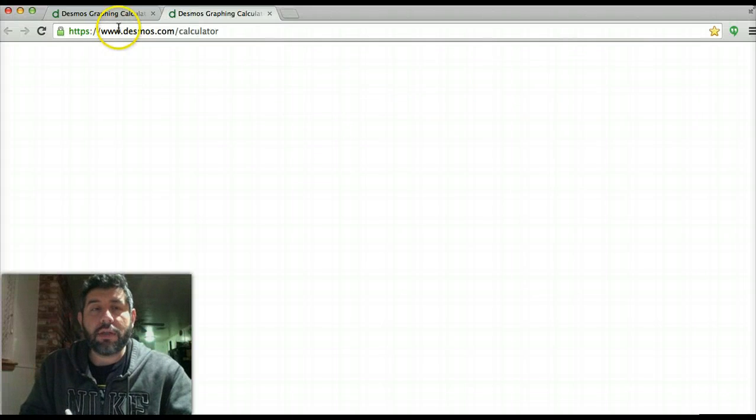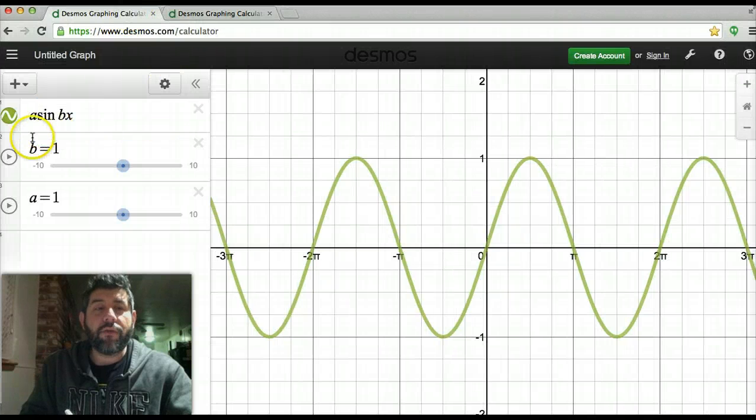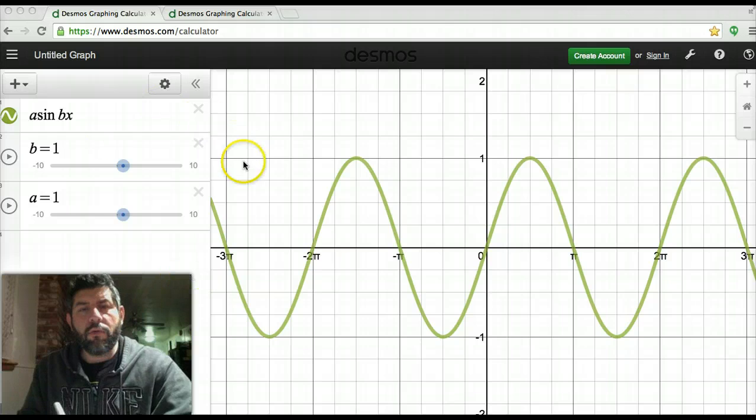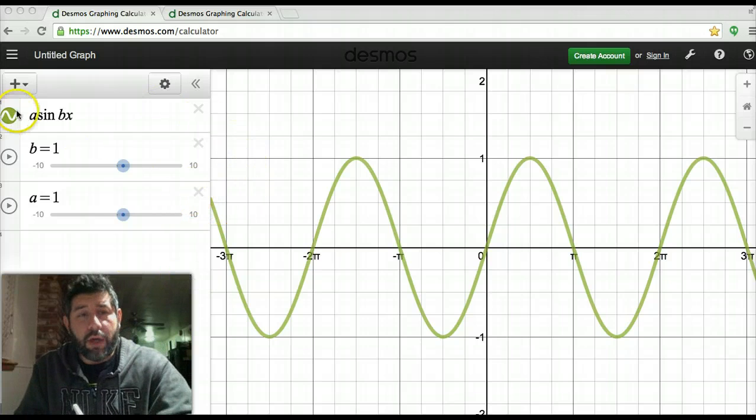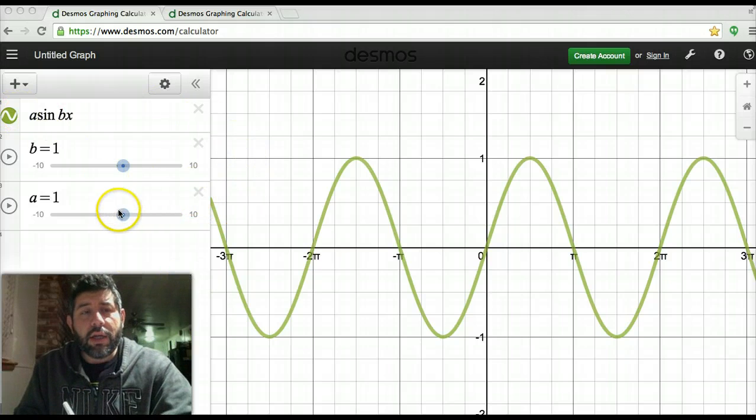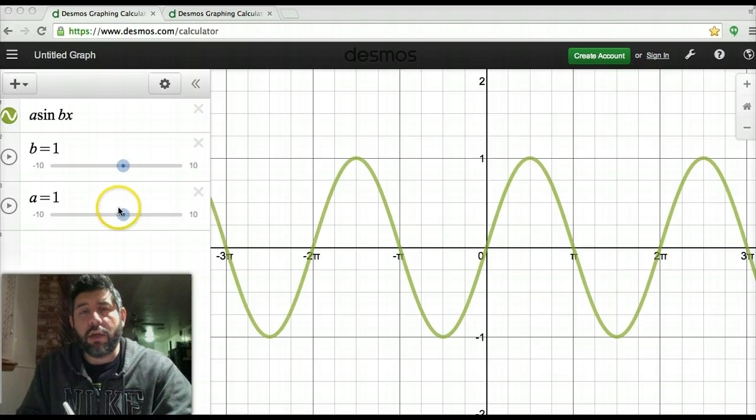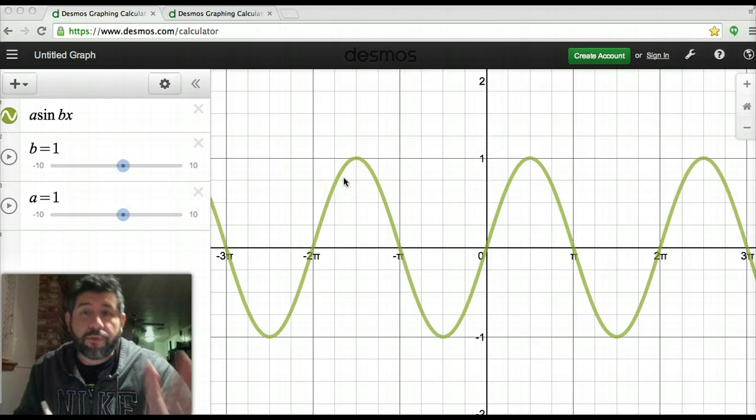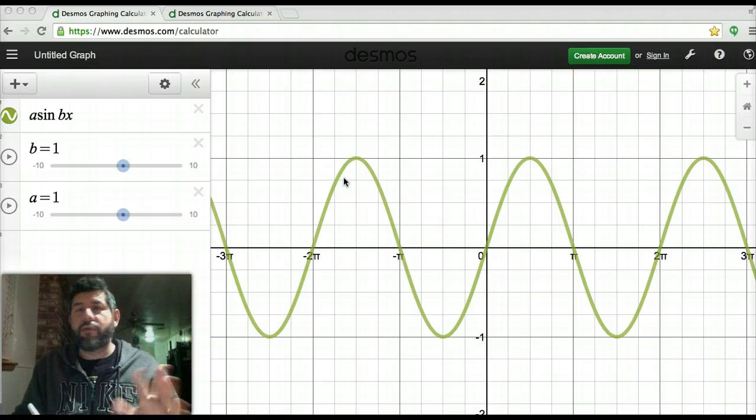So what I'd like to do first is let's take a look at the graph of y equals a sine of bx. Now, what I go over right here with a sine of bx is going to be the same thing for cosine. Just know that cosine starts at a different initial y value.